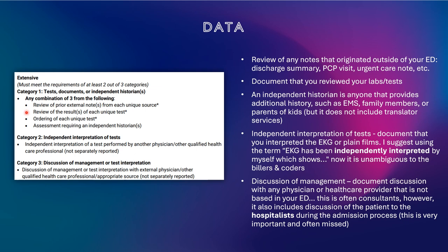Next, you want to document that you reviewed your labs and tests. Most electronic medical records will pull in that you obtained a unique test, so this doesn't need to be documented. And then finally, the independent historian — you want to document that you discussed the situation with anyone that is not the patient, such as EMS, family members, or parents of kids. They have to provide additional history, but this does not include a translator.